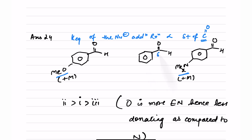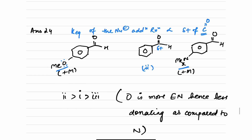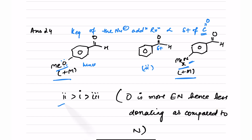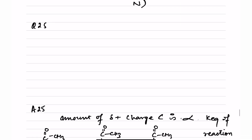Delta positive is highest for compound two. Comparing compounds one and three: compound one has oxygen (more electronegative), which donates less electron density, while compound three has nitrogen (Me2N), which has greater donating power. So MeO donates less than Me2N, meaning delta positive is slightly higher for compound one than three. The order of Keq is: compound 2 > compound 1 > compound 3.